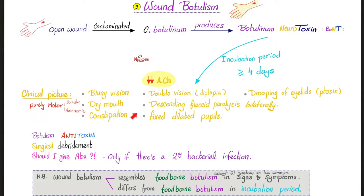Wound botulism: diagnose it with history, physical exam, and by culturing the wound, or by identifying and demonstrating the presence of botulinum neurotoxin in the wound. Treatment-wise: if we're talking toxin, give an antitoxin; if we're talking an open wound, surgical debridement; if there is a secondary bacterial infection, antibiotics.